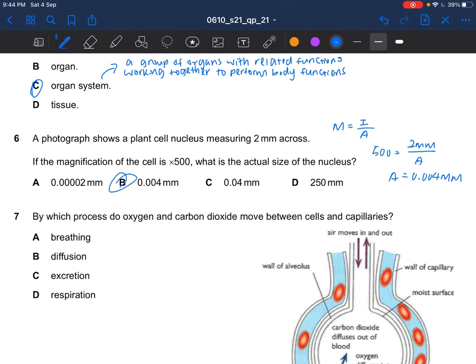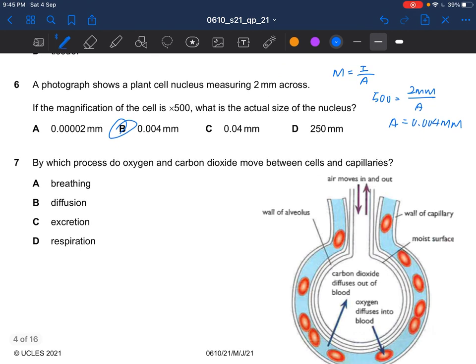Next question. By which process do oxygen and carbon dioxide move between cells and capillaries? Move between cells and capillaries. This is gas exchange. So the answer would be B, diffusion.